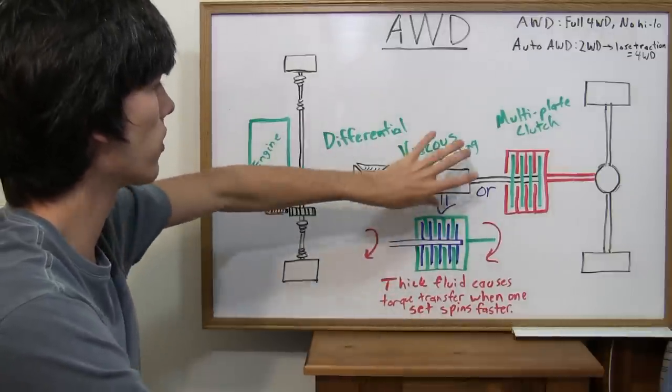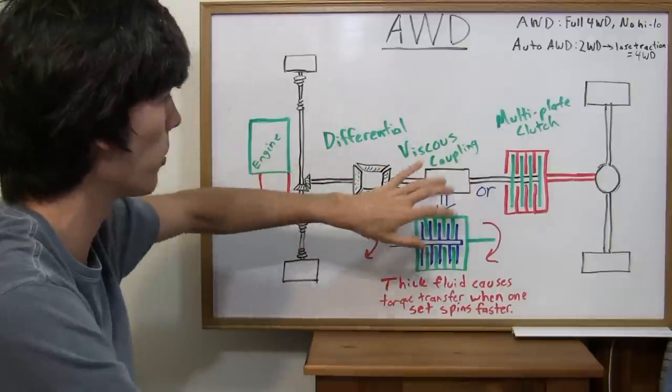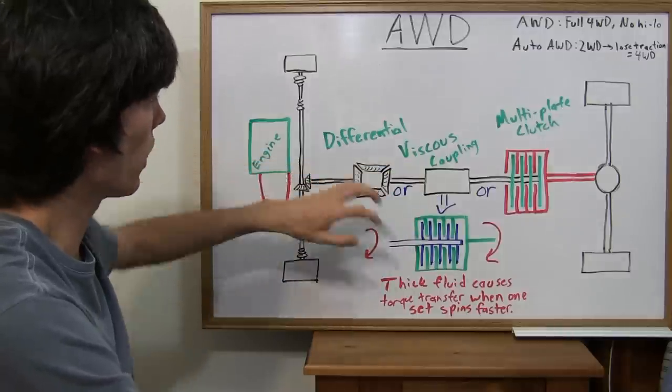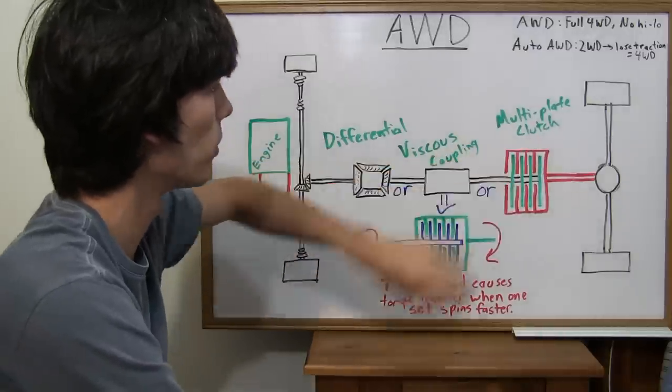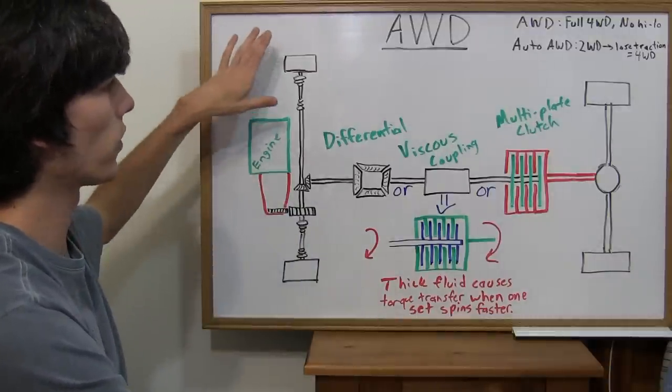So, let's ignore this viscous coupling and say that doesn't exist. And we could take that out or we can leave it, no big deal. So, we'll have that in there. Okay, so let's just say that's gone and we've got this multi-plate clutch.